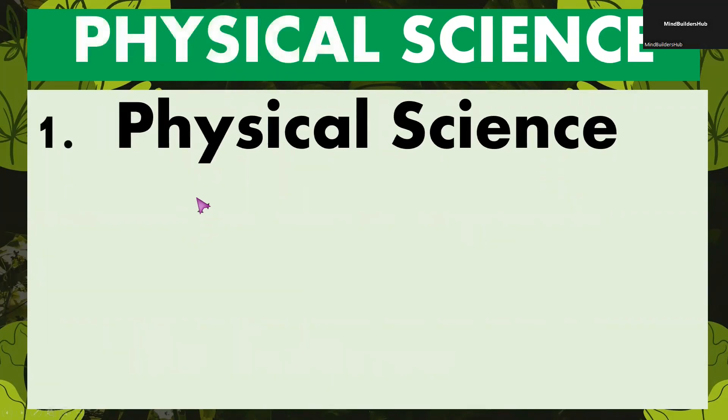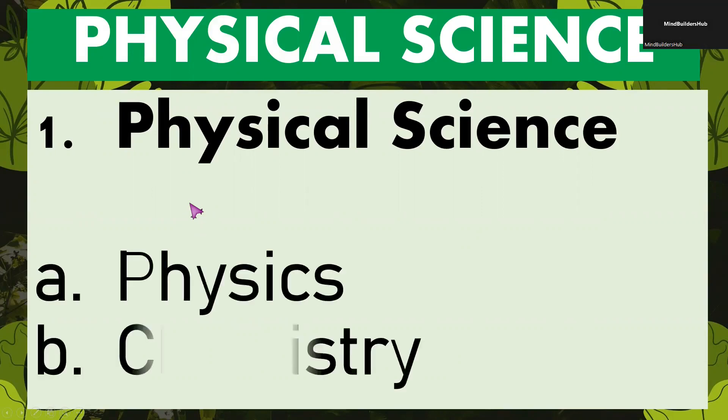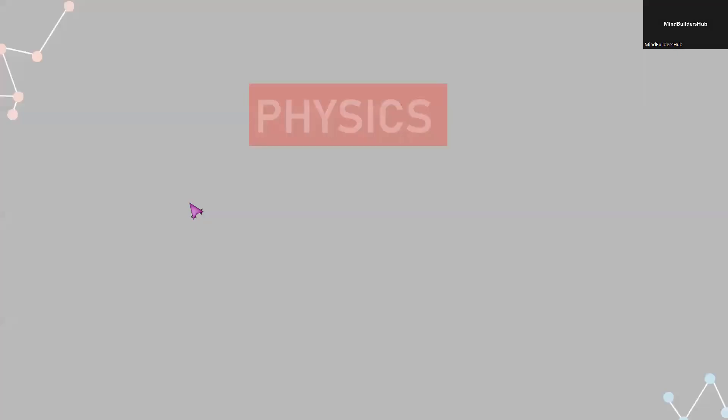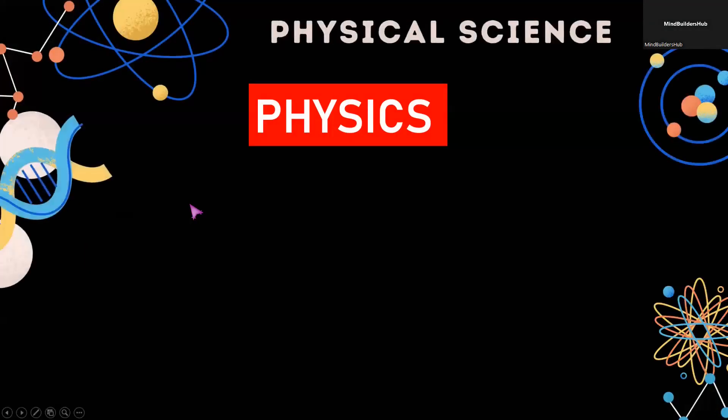To start with, in physical science or physics, it involves the following: we have physics and chemistry. So, how are we going to differentiate these two, even if they are under physical science?